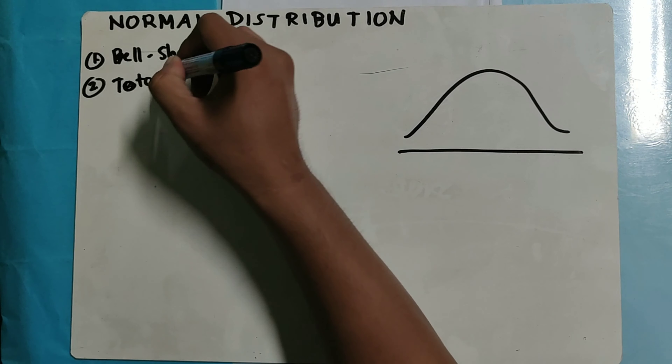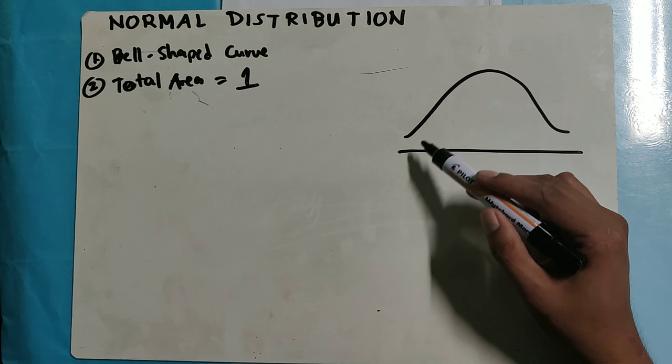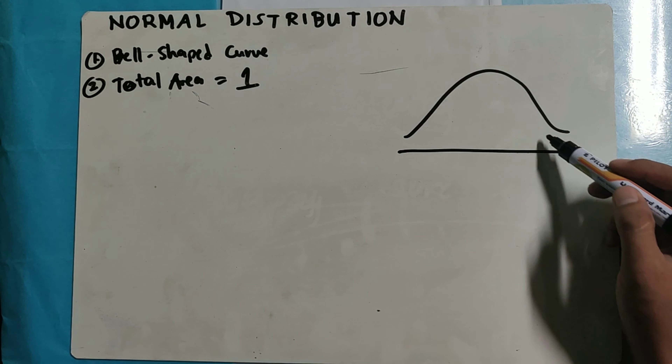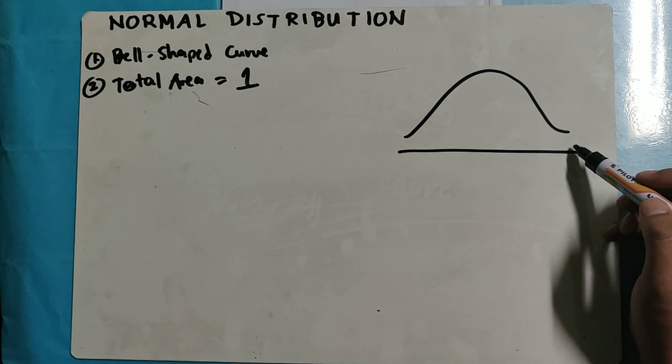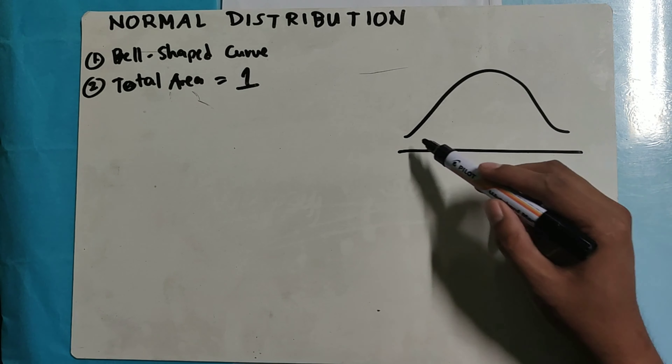There are three things that come in our mind when we talk about normal distribution. First, we have the bell-shaped curve. It looks like this — so this is our bell-shaped curve.